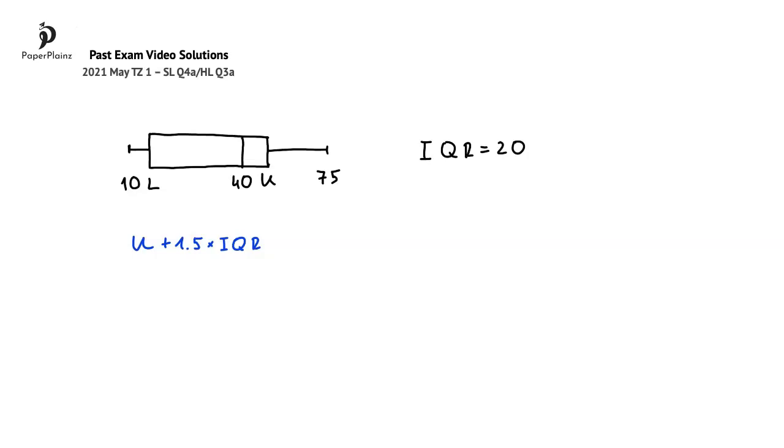The key here is that we are told that there are no outliers in this dataset. This means that the result of this calculation must be greater than or possibly equal to the biggest data value in the dataset, so 75. This is so because otherwise 75 would be an outlier.